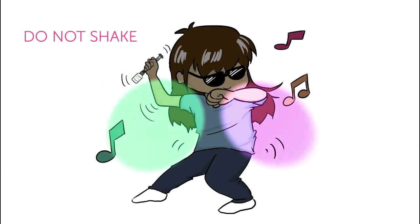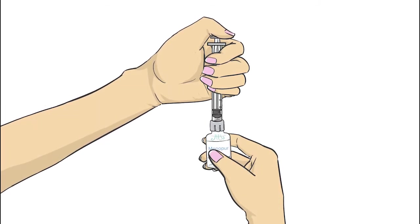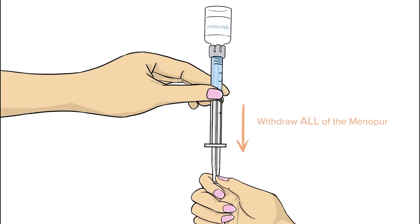Do not shake the vial. Immediately after the powder has completely dissolved, push the plunger all the way down to remove any remaining air from the syringe and withdraw all of the Menopur into the syringe.